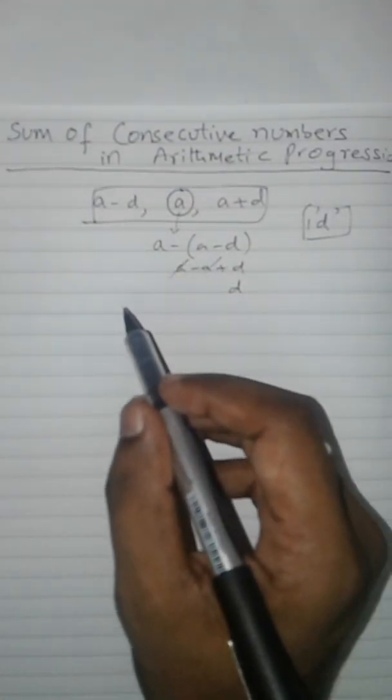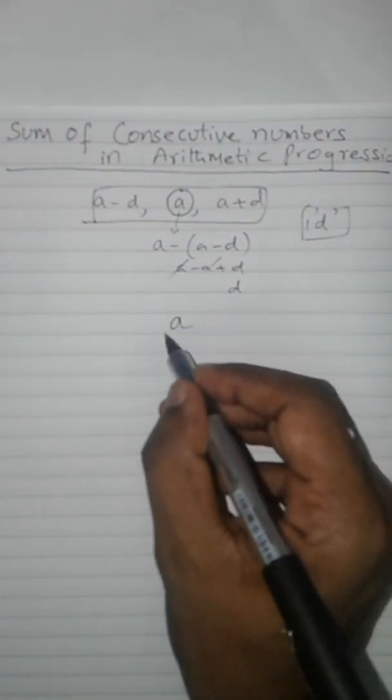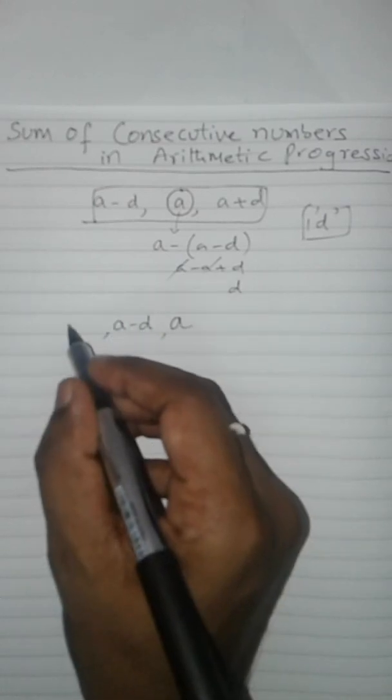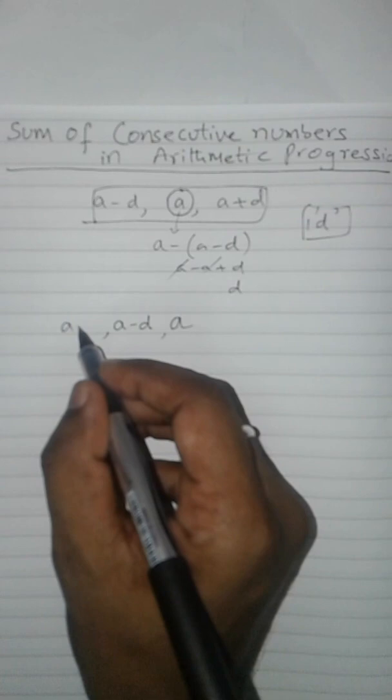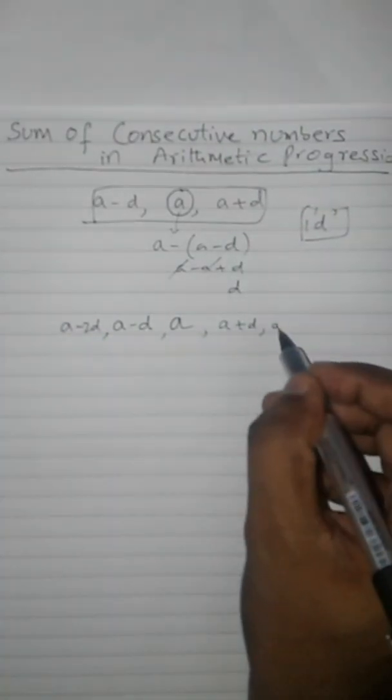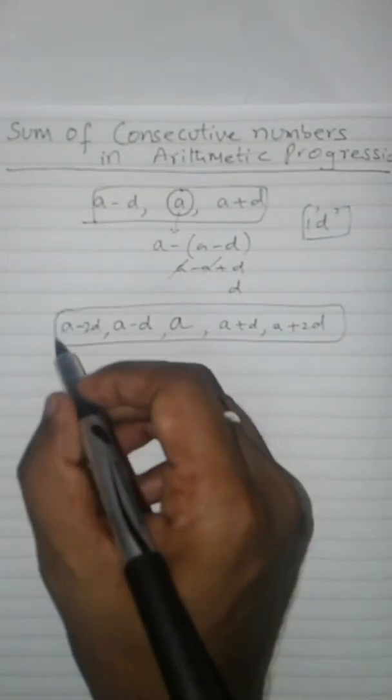Likewise, if they ask you for the sum of five terms of AP, then remember in the middle it should be a. Since the difference is 1d, then there should be 2d here. So these are our sum of five terms of AP.